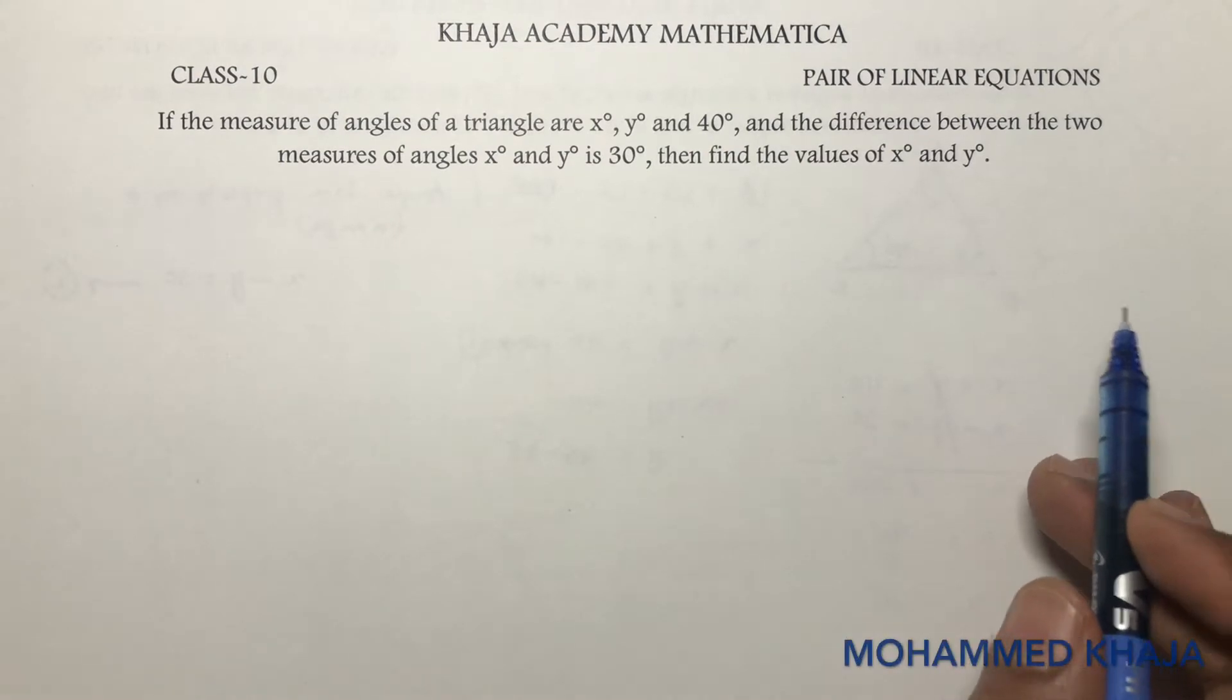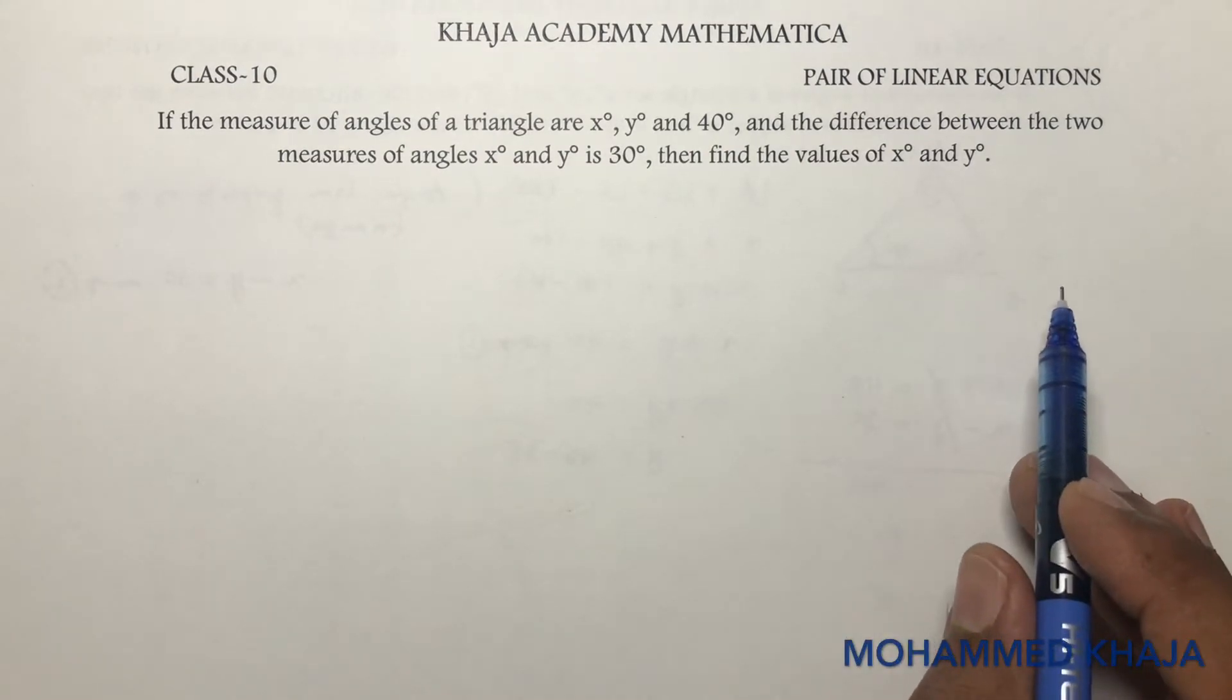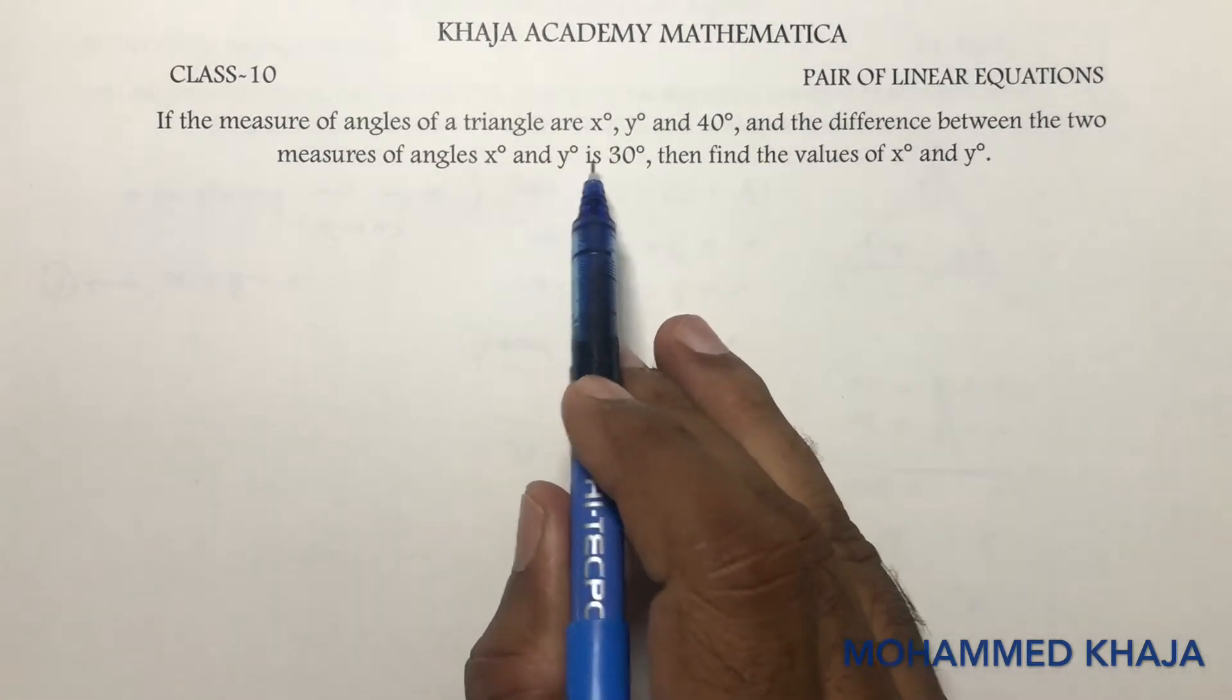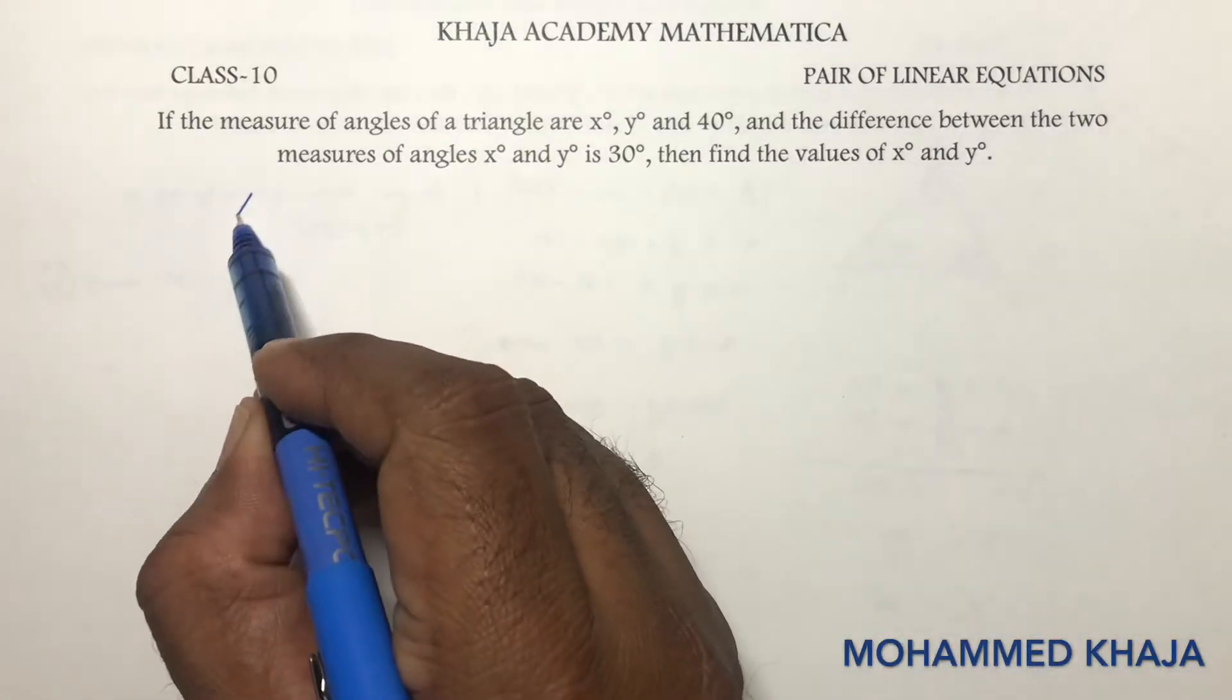If the measures of the angles of a triangle are x degrees, y degrees, and 40 degrees, and the difference between the two measures of angles x degrees and y degrees is 30 degrees, we need to find the values of x and y.